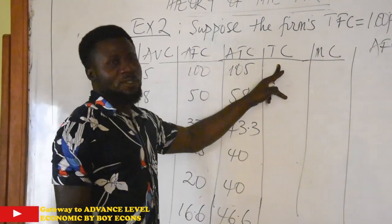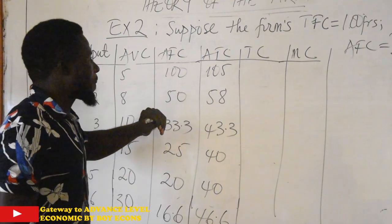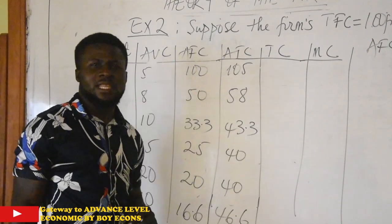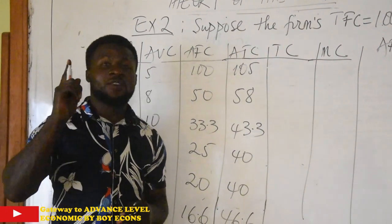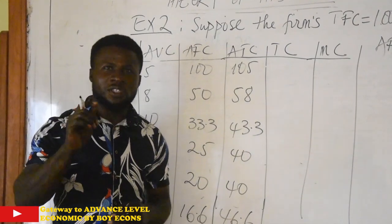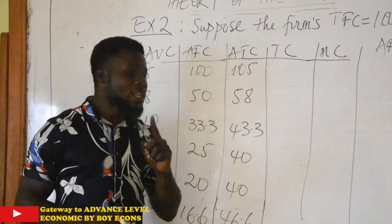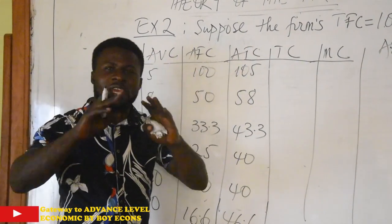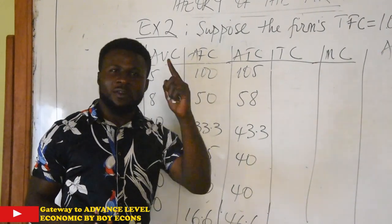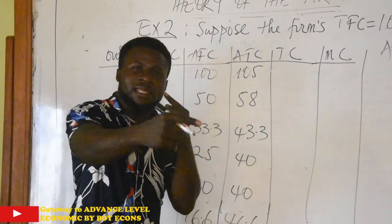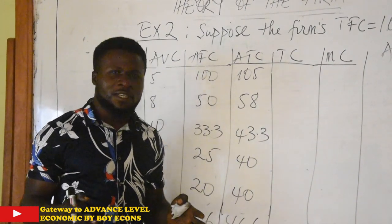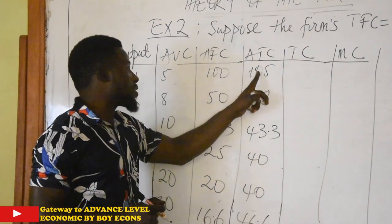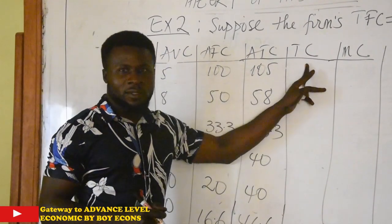Our total cost can easily be gotten by multiplying average total cost by output. Remember we said that average total cost is per-unit cost — the cost you spend on a single item. So if average total cost is the cost per single item, then taking that cost times the number of items produced gives you your total cost.